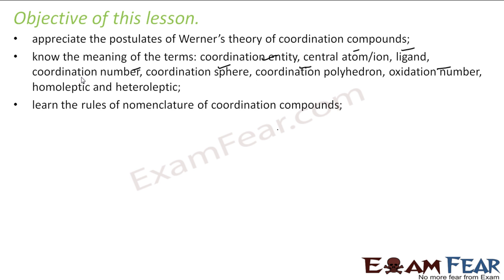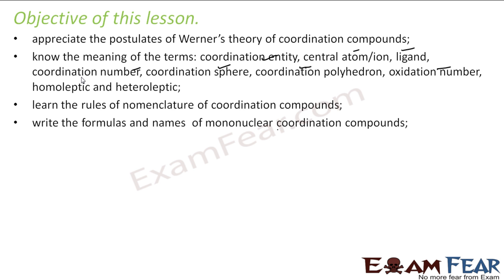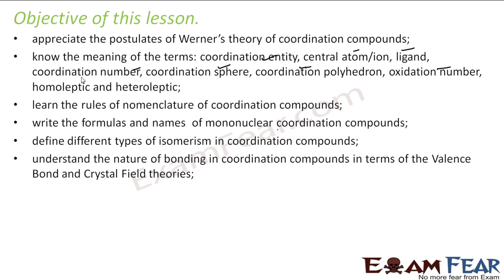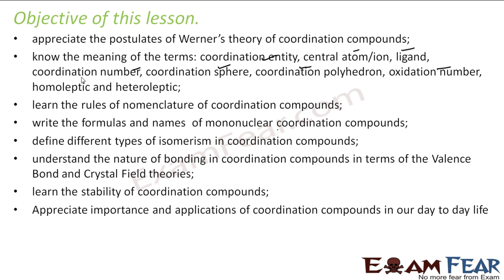We will see how IUPAC has defined ways to write names for Coordination Compounds. We will write the formulas and names of some Mononuclear Coordination Compounds. We will define some types of Isomerism in Coordination Compounds, understand two theories — Valence Bond Theory and Crystal Field Theory — on bonding, and also learn about stability and the importance of Coordination Compounds in our daily life.